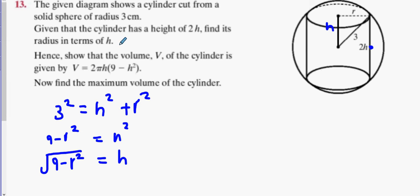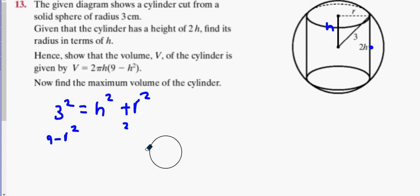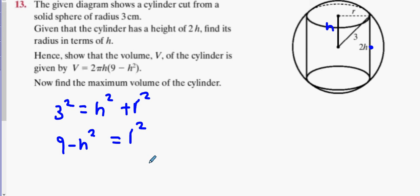Oh sorry — get the radius in terms of h. So let's go back to the second-last step, the very first step, and instead just move h over. The radius on its own is the square root of 9 minus h squared.